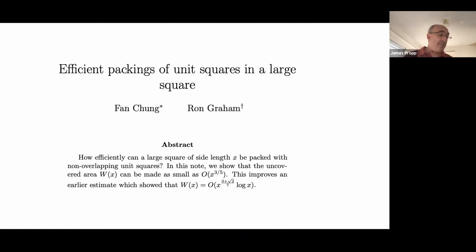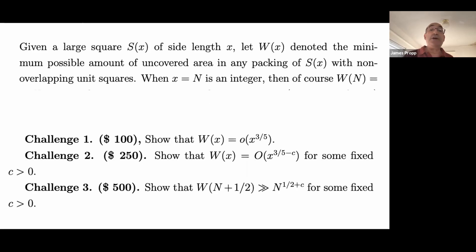If you can reduce that exponent even further, or if you can prove that nobody can, Chung will pay you $250.